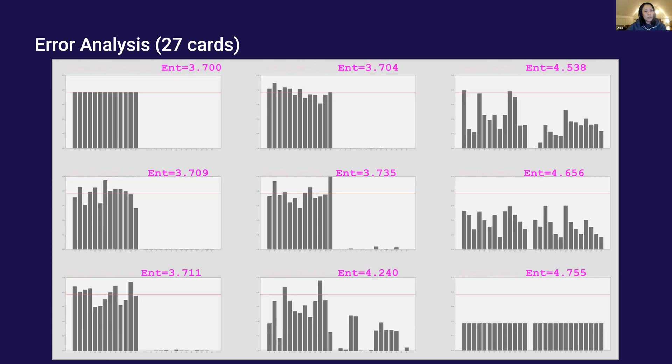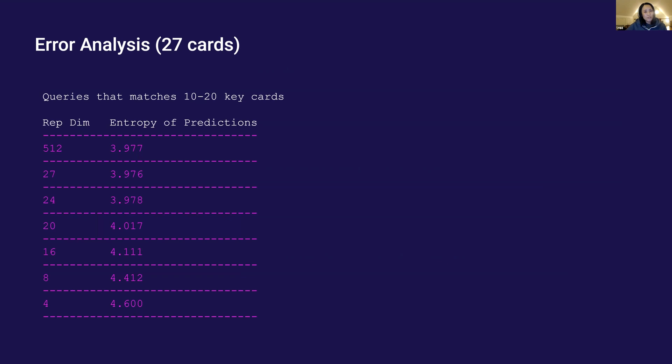Using entropy of predictions as a measure of this phenomenon, what we saw from a previous example can generalize to all the queries that match with 10 positive ground truth key cards. The entropy of predictions increases as vector dimension decreases.